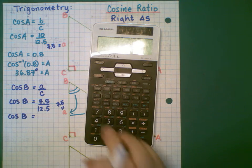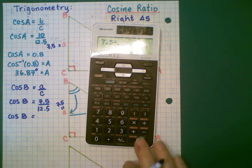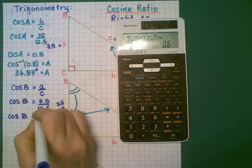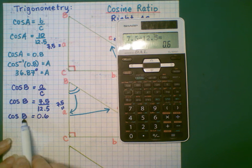Again, number over number. I can evaluate that. So that's 0.6. So to find the angle measure for angle B...